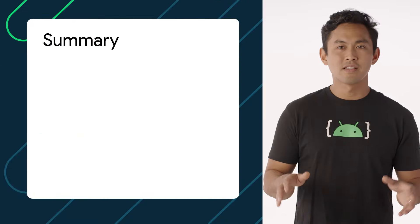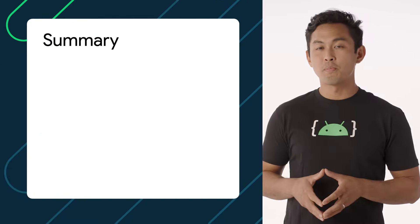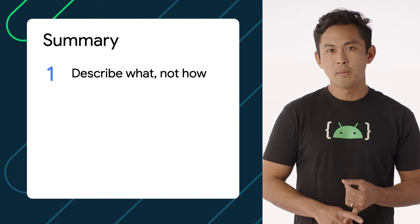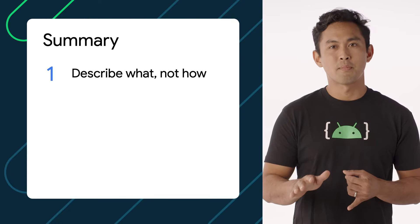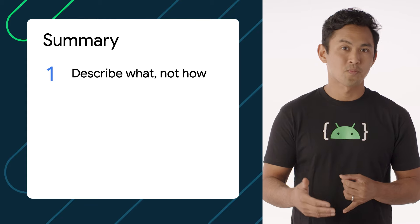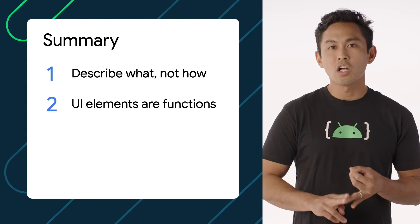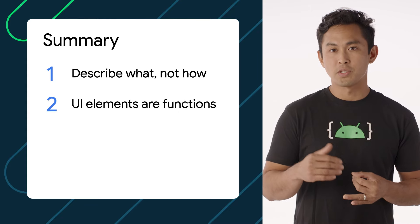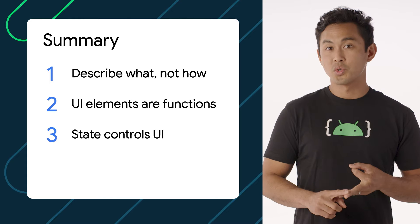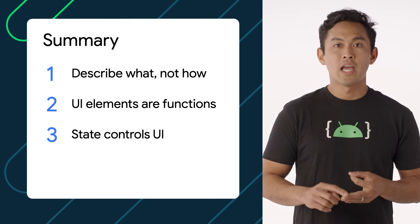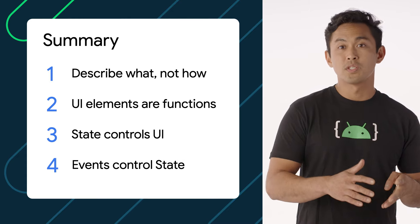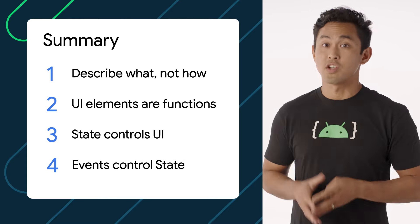To summarize, to think in Compose, we declare what we want our UI to contain, but we don't tell it step-by-step how to do it, unlike Views. We use Kotlin functions to represent our UI elements, we pass in state to control UI, and we use events to update state, which in turn updates our UI.